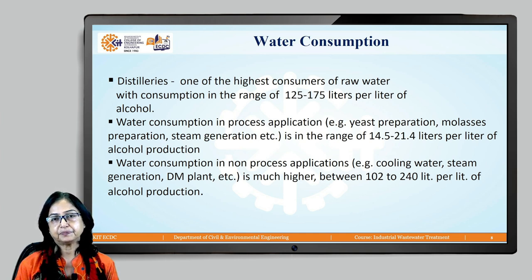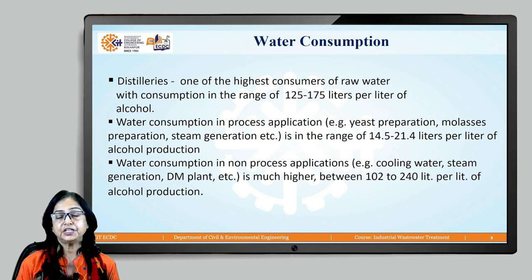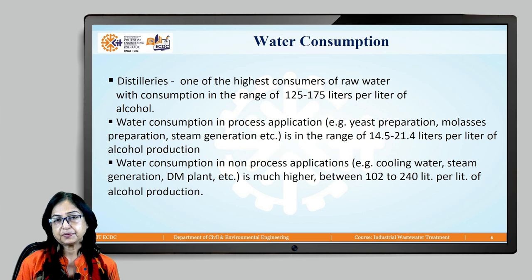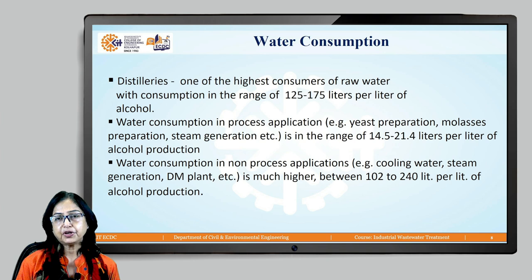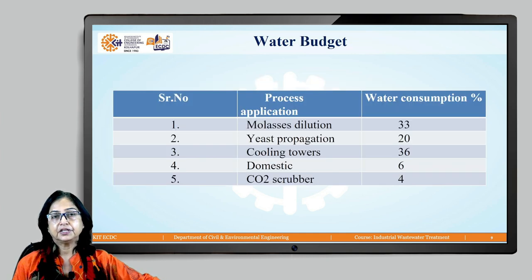This industry is one of the highest consumers of raw water, in the range of 125 to 175 litres of water per litre of ethyl alcohol produced. Large amounts of water are required for dilution, yeast culture preparation, and steam generation. For process applications, the water requirement is about 14.5 to 21.4 litres per litre of alcohol, but non-process application water requirement is even higher — 102 to 240 litres per litre of alcohol produced.